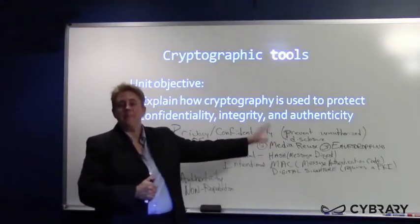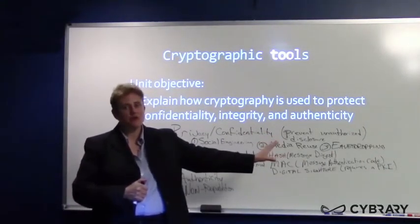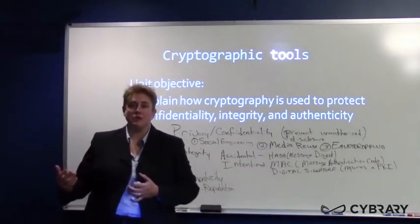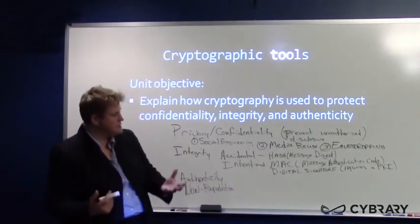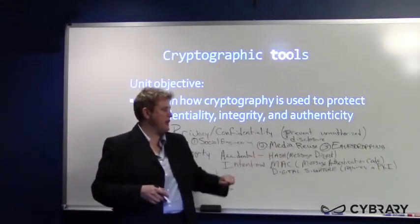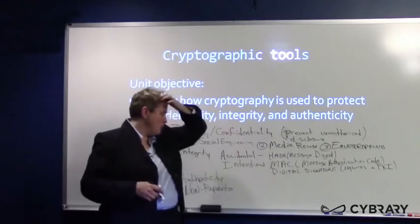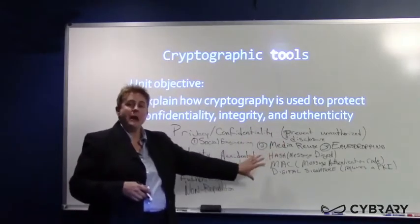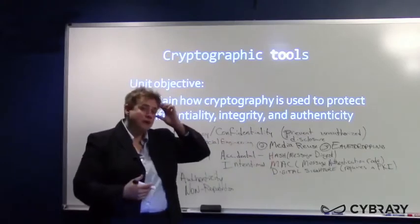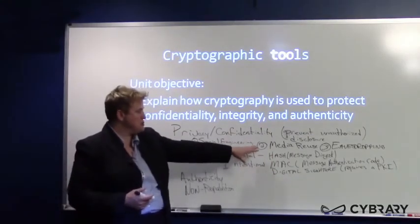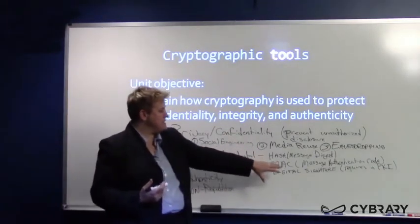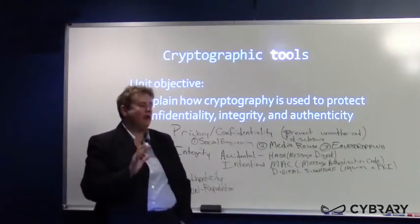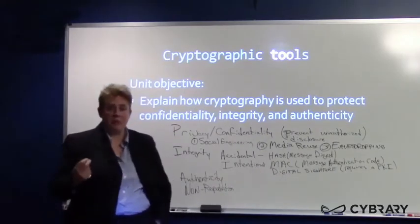The first is called a MAC — Message Authentication Code. MAC is one of those acronyms that means lots of different things; you may have seen mandatory access control or media access control, but here MAC means Message Authentication Code. A digital signature can also detect intentional modification, but it does require an infrastructure. So hashes detect accidental modification, while MACs and digital signatures detect intentional modification.